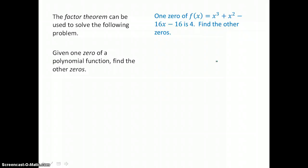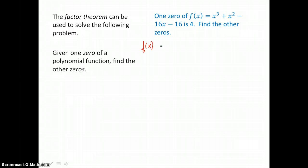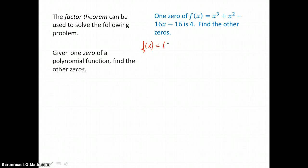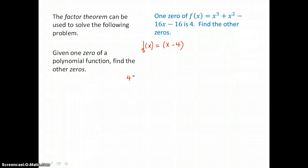We can also solve this problem: one zero of f(x) = x cubed plus x squared minus 16x minus 16 is 4. Find the other zeros. To find the zeros, we want to factor completely, then let y equal 0, and use the zero product property to solve. Since we're given one zero, it belongs in the factor x minus 4. So we take that value of 4.